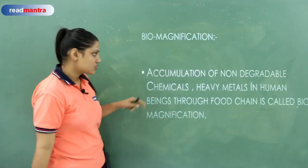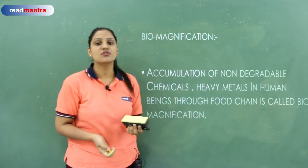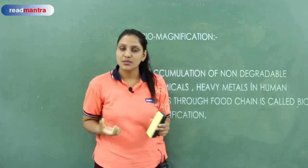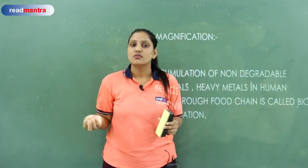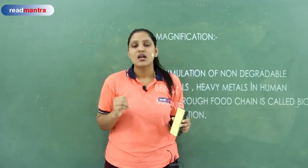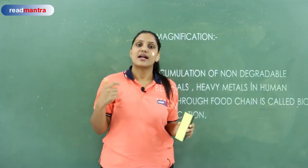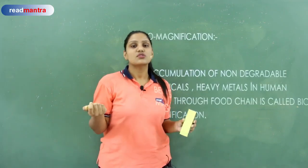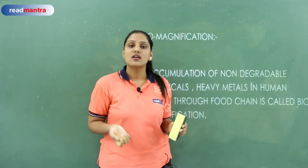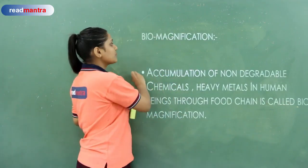Biomagnification: the accumulation of non-degradable chemicals and heavy metals in human beings through the food chain. For example, DDT was an agricultural product. It dissolved in water, was eaten by zooplankton — DDT was not excreted and was retained in their body. Smaller fishes ate the zooplankton and its concentration grew. Then larger fishes, then birds — ultimately birds showed the maximum problem. Calcium metabolism was disrupted, eggs broke prematurely. And if human beings eat contaminated fishes, the food chain is disturbed and serious diseases occur.